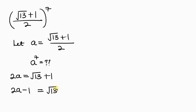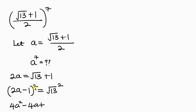To get rid of the square root, we square both sides. Expanding the left-hand side: 2a squared gives 4a squared, minus 2 times 2a times 1, which is 4a, plus 1 squared, which is 1. This equals 13, since the square cancels the square root.